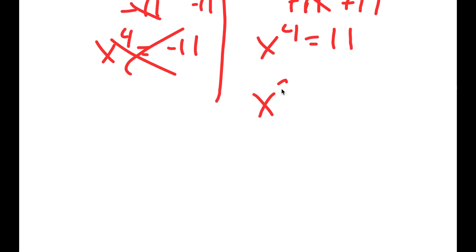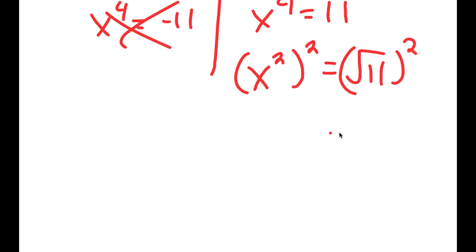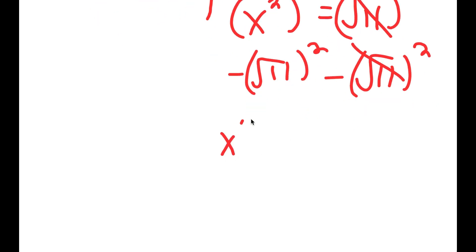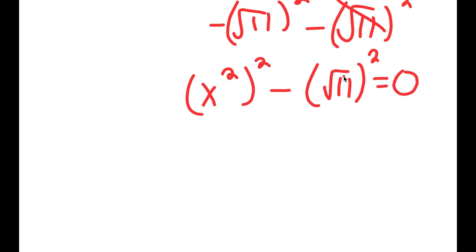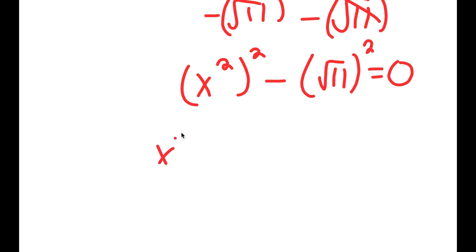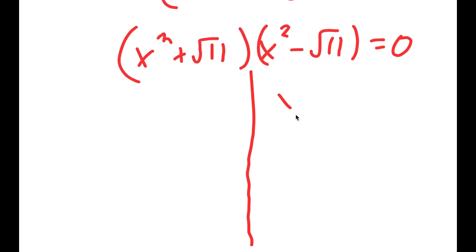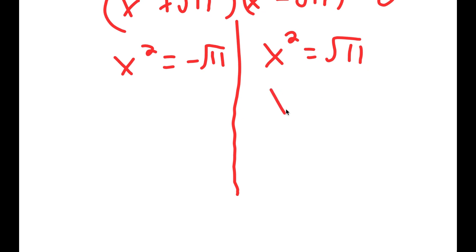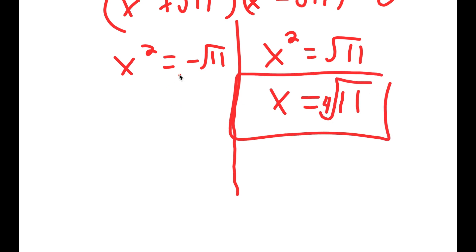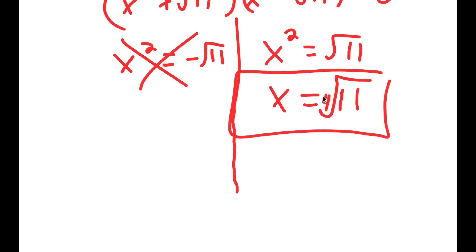For x to the power of 4 equals 11, I rewrite this as x squared to the power of 2 equals the square root of 11 squared. Subtracting the square root of 11 squared on both sides gives x squared plus the square root of 11 times x squared minus the square root of 11 equals 0. So x squared equals the square root of 11, or x squared equals negative square root of 11. For x squared equals the square root of 11, x equals the fourth root of 11. The other case has no solution, so the fourth root of 11 is the only solution.